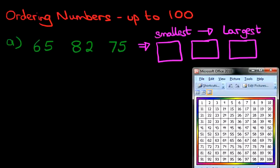Here is the number grid. Let's have a look at our three numbers. Now, I want you to find each of these numbers, and I want you to do this.